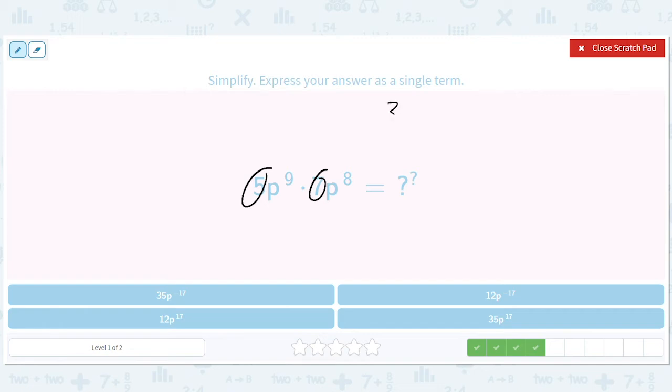So we have 35. Constant, constant. P to the ninth, P to the eighth. So P to the nine plus eight, which will give you 35P to the 17th.